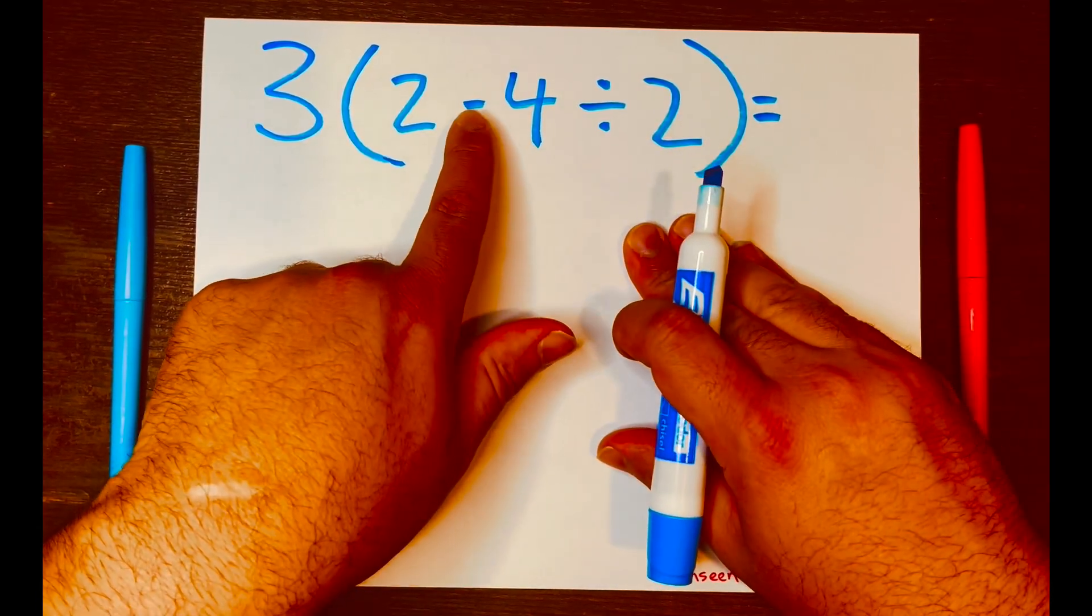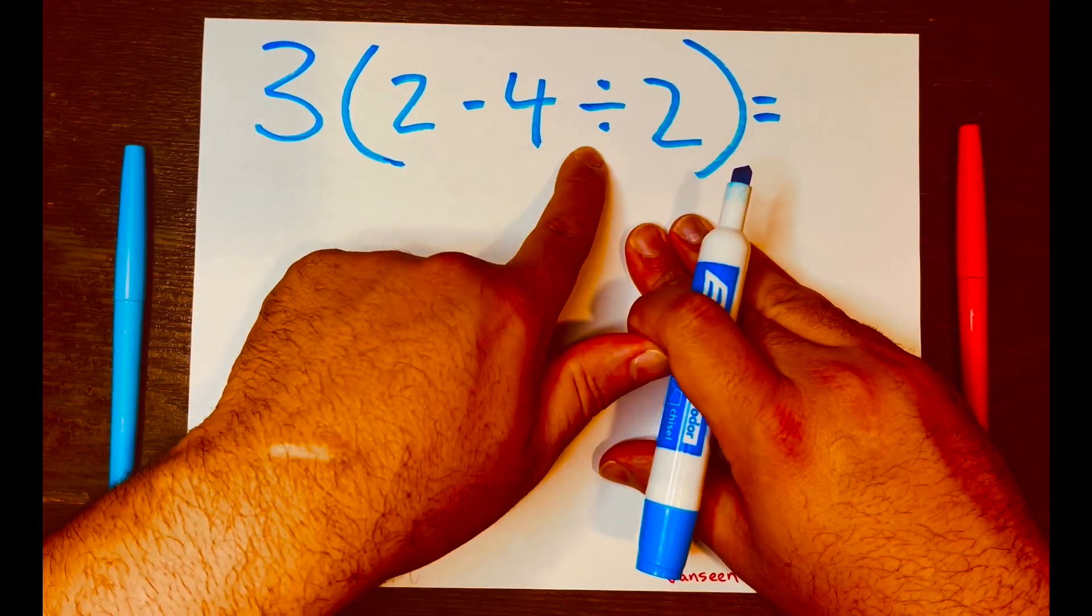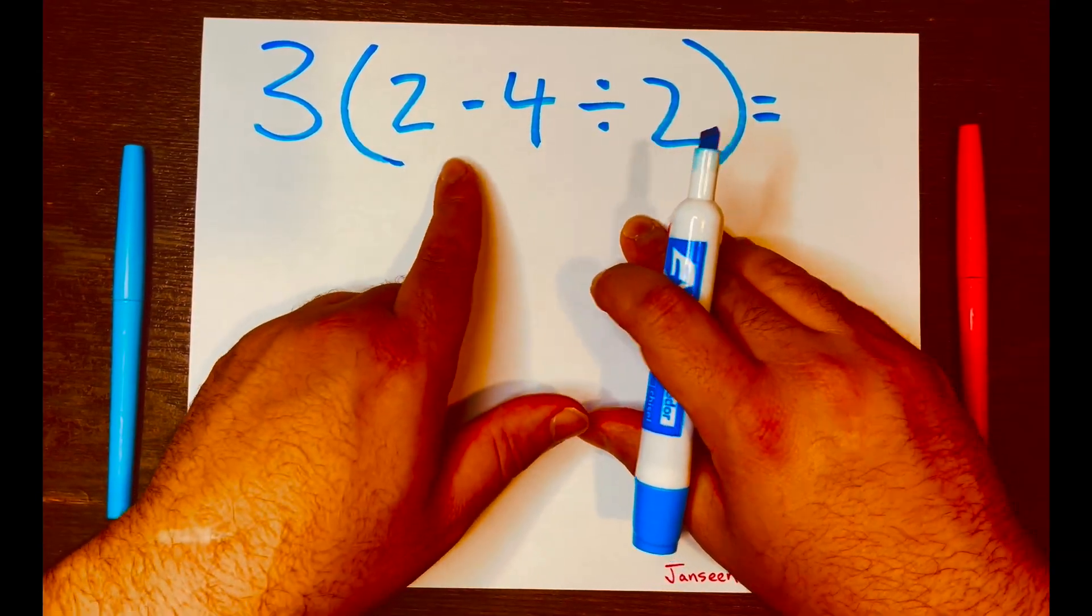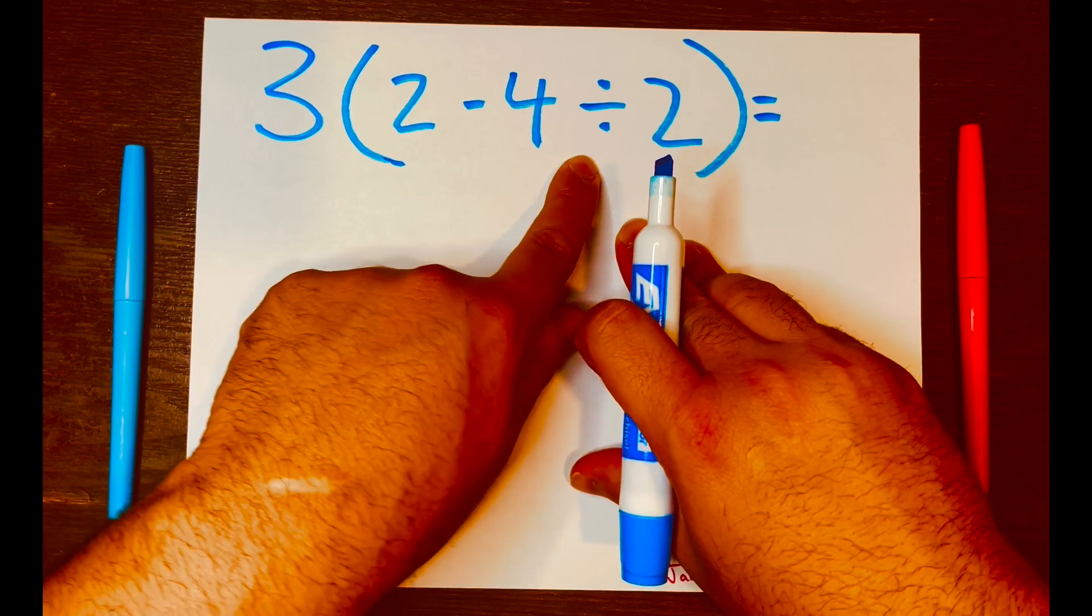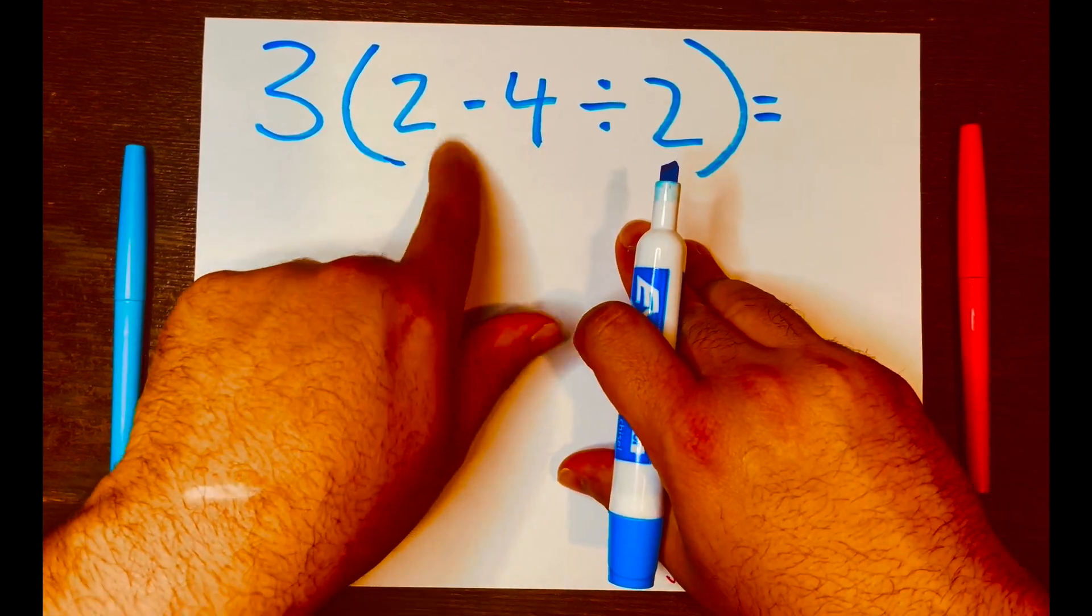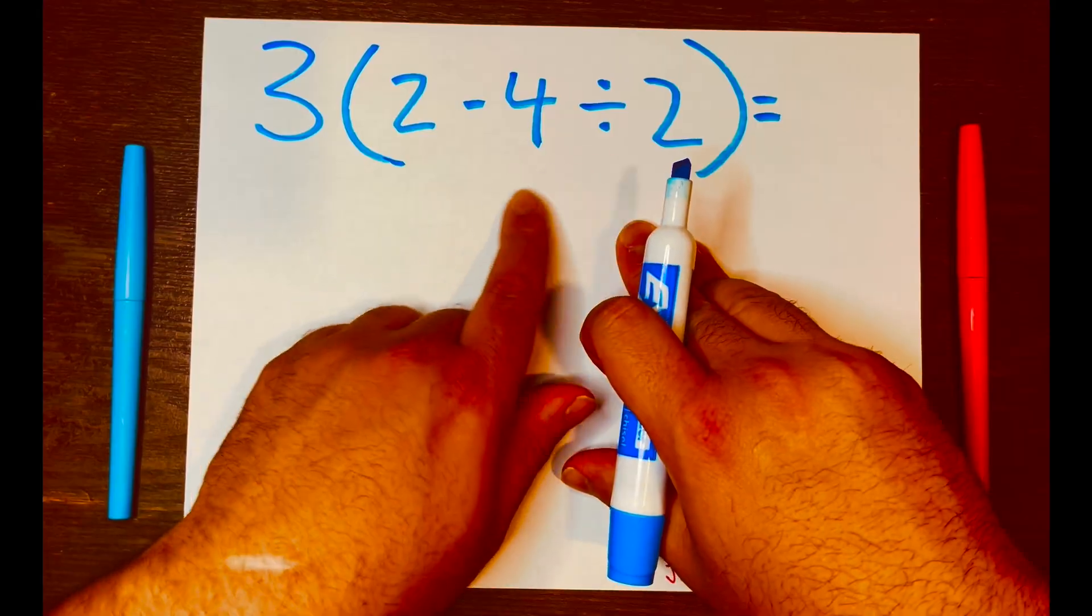And then looking at the other operations, I see subtraction, I see division. We read from left to right, and I know that division has higher level or priority than subtracting. So division goes first.